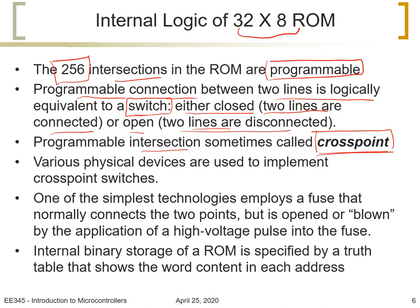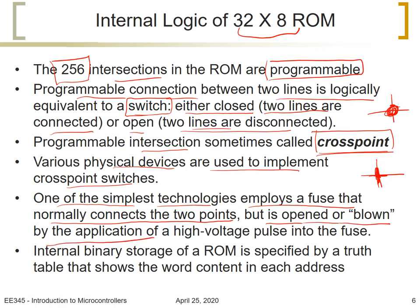Various physical devices are used to implement the crosspoint switches. One of the simplest technologies employs a fuse that normally connects the two points. So usually these points are connected by a fuse, and the fuse is opened, the switch is opened or blown, we call it, by the application of high voltage pulse into the fuse. So when we manufacture the ROM first, they will always be closed, and where we want to store 0, this will be open, so we blow up the fuse.